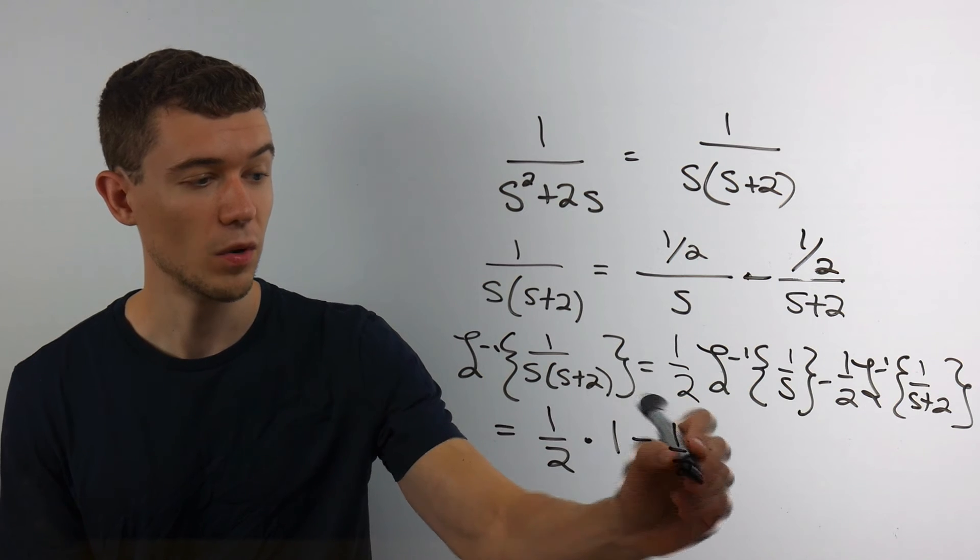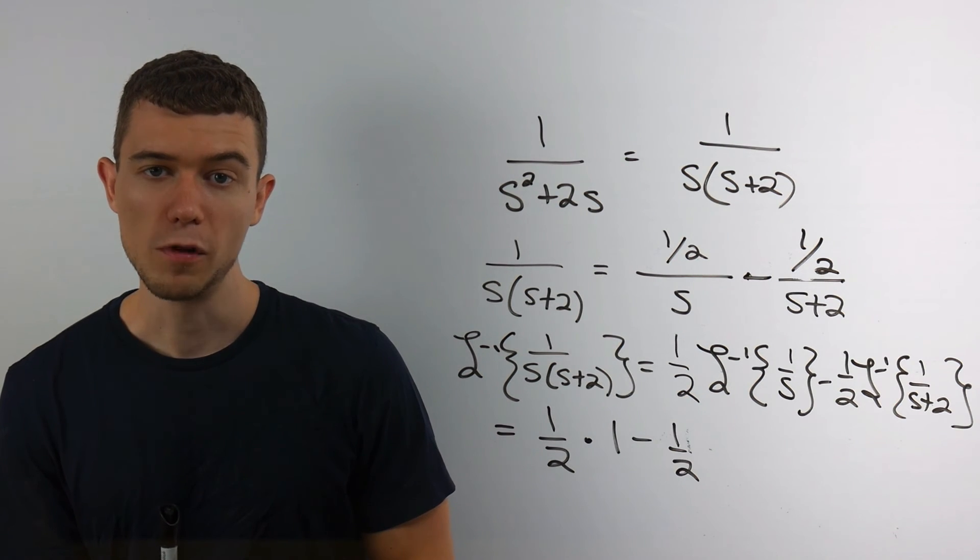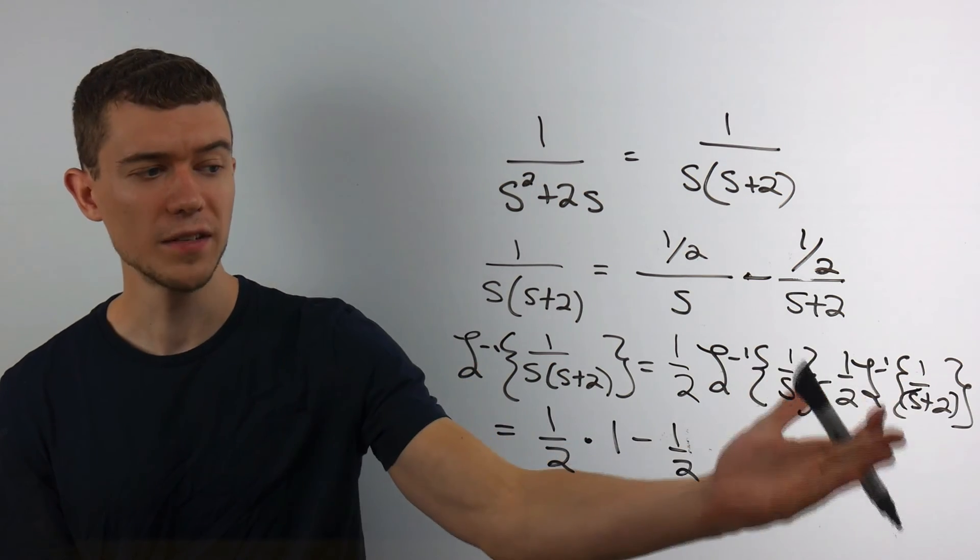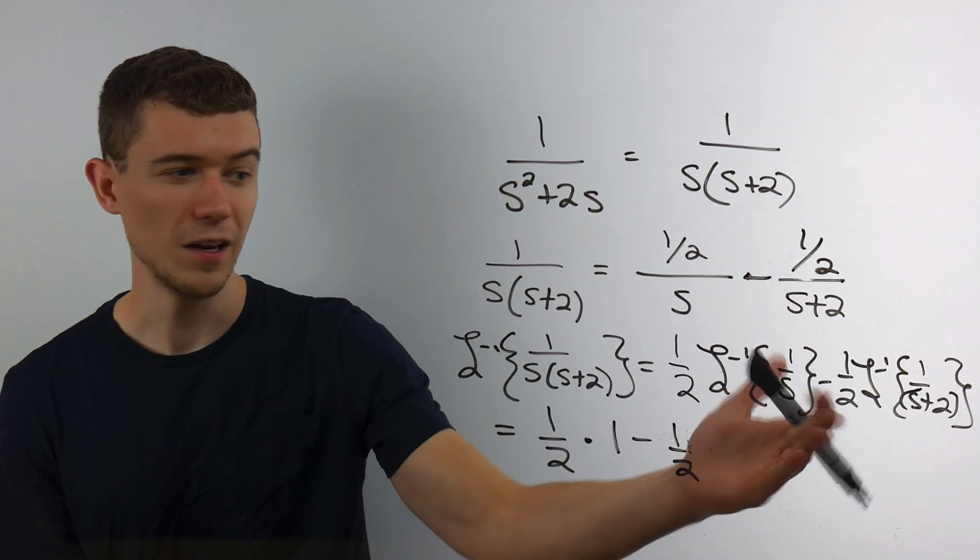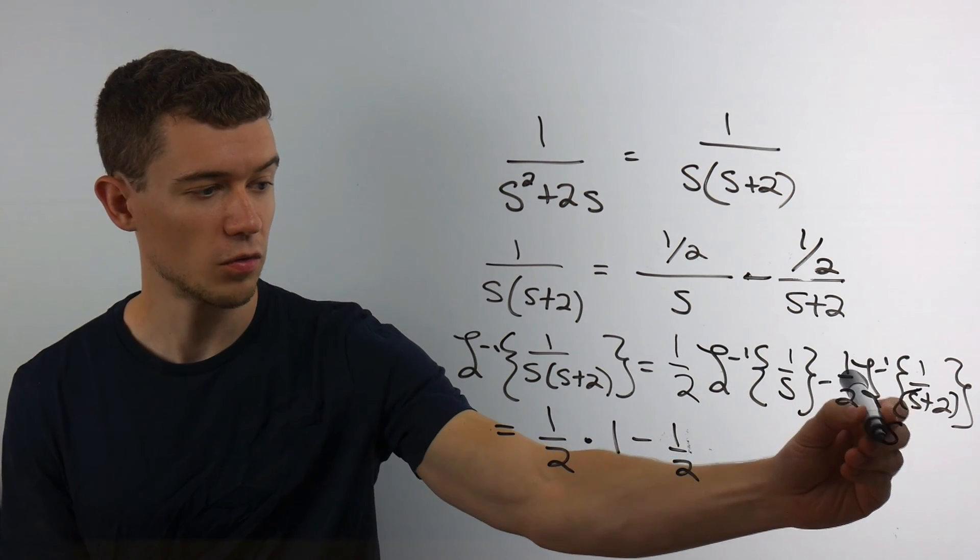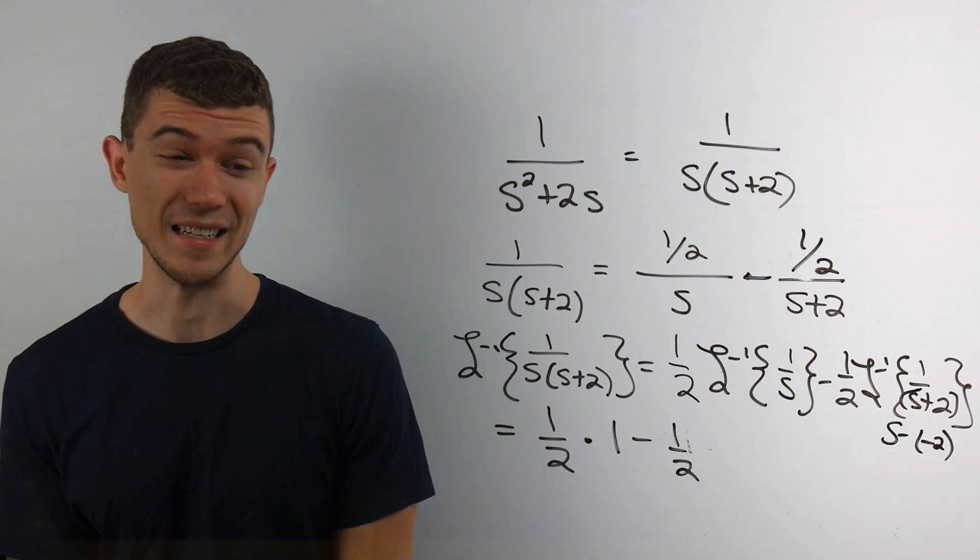Let's think. If you look on the table of Laplace transforms, or if you just know it, if you have something that's transformed into 1 over s minus something, here this s plus 2 is really minus negative 2. That's really the transform of e to the at.